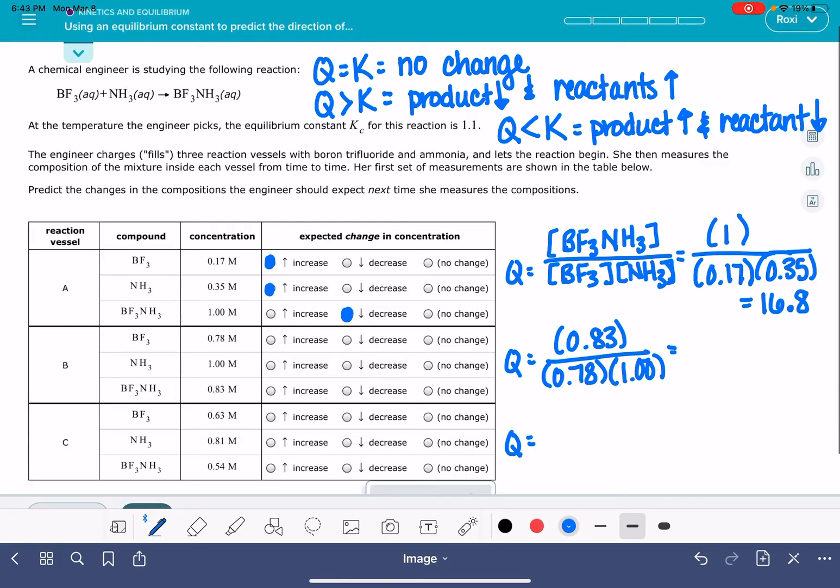0.83 divided by 0.78 works out to be 1.06. When we round it so that it has the same number of decimal places as the K value, it's 1.1 equal to K, which means there will be no change at all because it's equal to K.